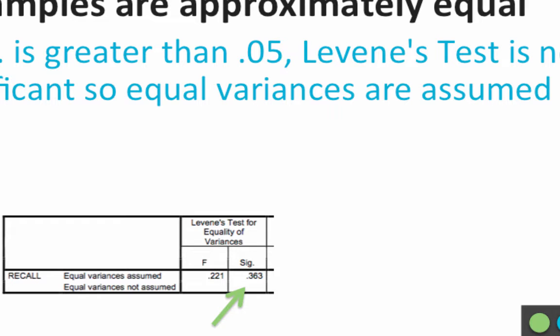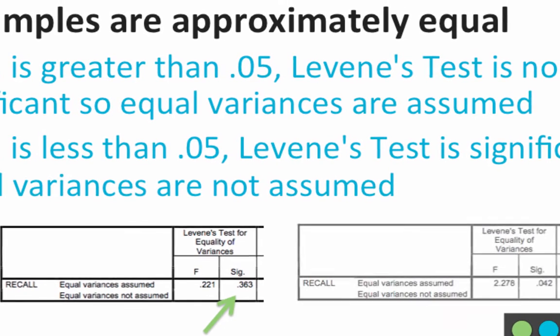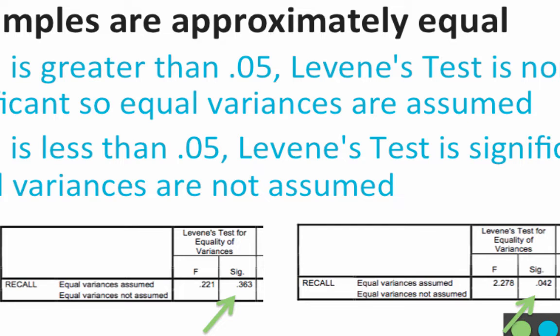However, if we check the significance value for Levene's test and find that it is less than 0.05, then there are significant differences between the variances, and we cannot assume that the variances are approximately equal. So when we do our interpretation of the t-test, we want to first check that Levene's test is non-significant. If it is significant, we need to interpret our t-test slightly differently.